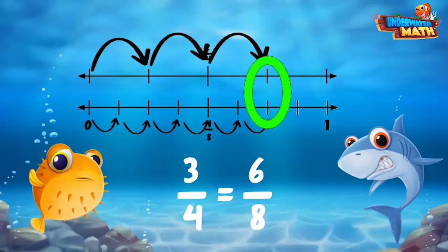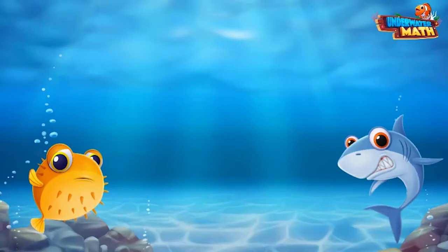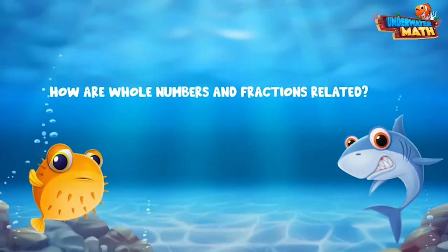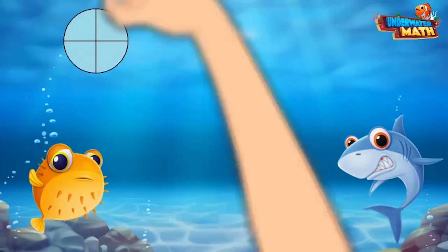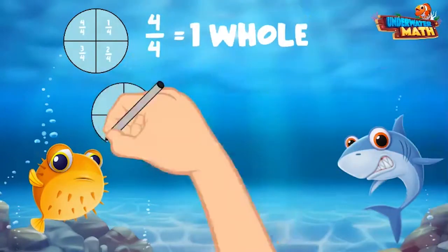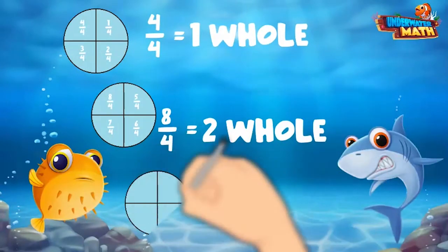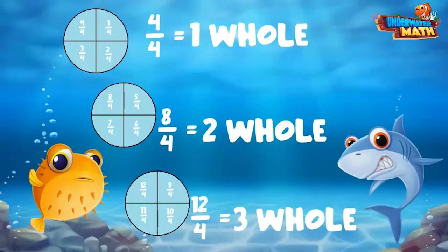There is something I've always wondered about — how are whole numbers and fractions related? We use both all the time. Very good question, Nitro. Whole numbers and fractions are related. We use fractional parts to make up whole numbers. For example, if we had four fourths, then we would have one whole. If we had eight fourths, now we have two wholes. And if we had twelve fourths, we would have three wholes — we just needed another full set of fourths. That's exactly right, nailed it!